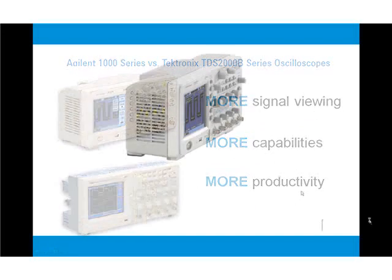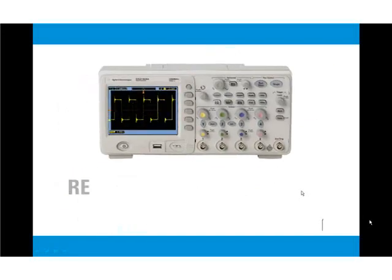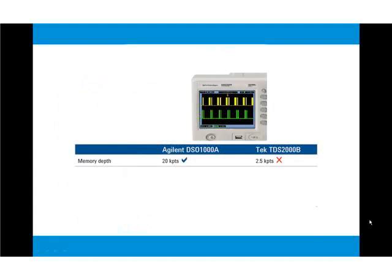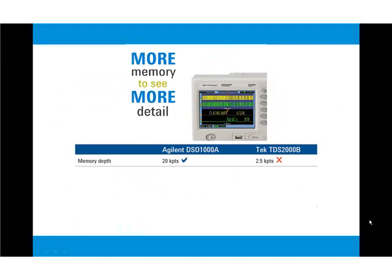See more of your signal, more of the time. Up to 8 times more memory than Tektronix TDS-2000B scopes, Agilent's 20 kilopoints of memory per channel means you see more time and more detail on your signal.